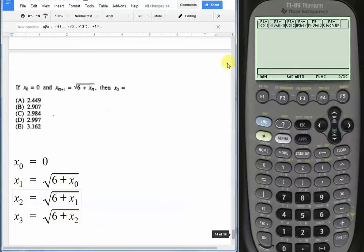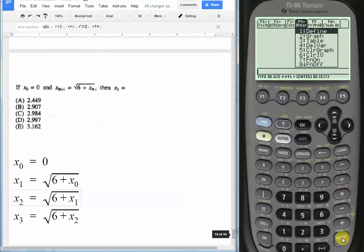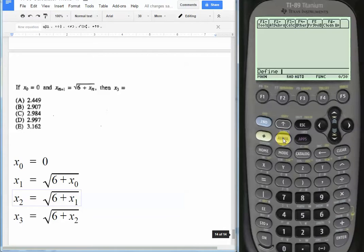So let's define a function here. Let's hit f4 for our drop-down, choice number 1 defined, and we're going to say what f of x is equal to. So we push alpha, and then f, open the parentheses.